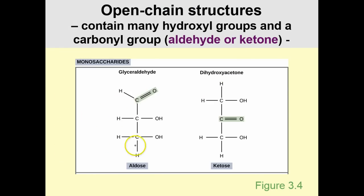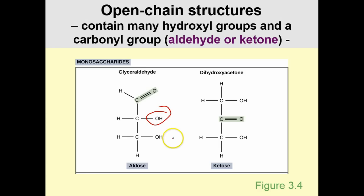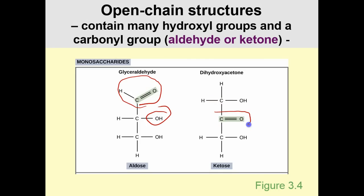There are two main types of monosaccharides: the aldose and the ketose. They contain many hydroxyl groups throughout. The difference between aldose and ketose is in the functional group on the end — an aldose has an aldehyde on the end, while a ketose has a ketone group in the middle. A ketone is R bound to a C double bond O and another R group.